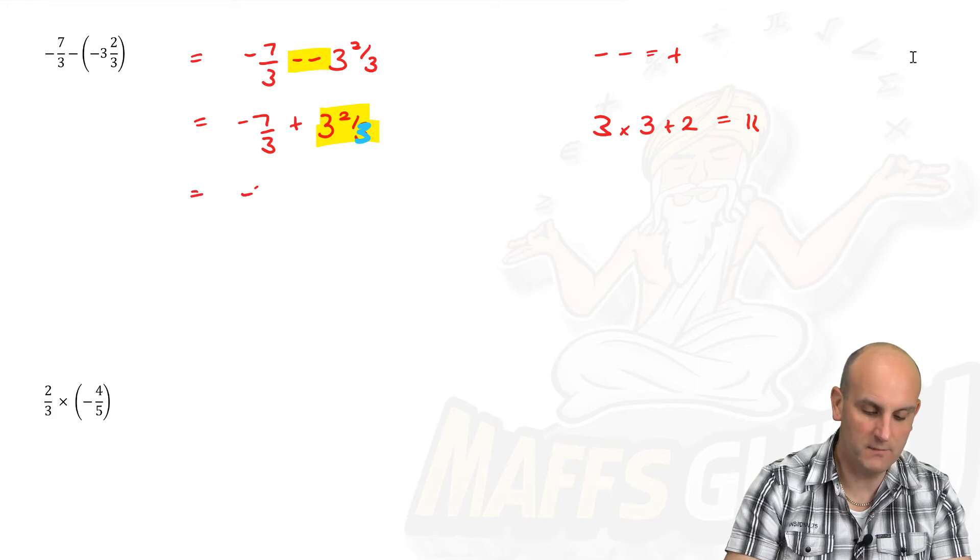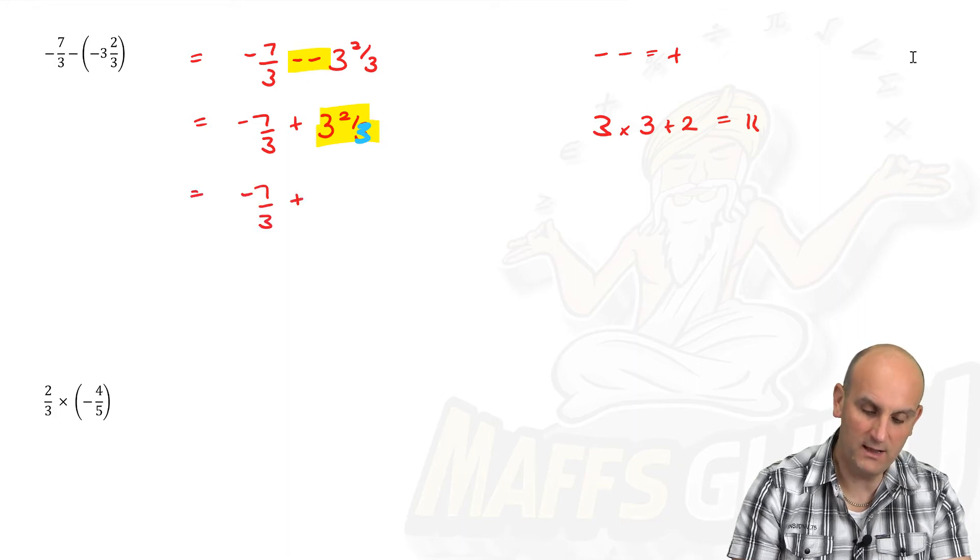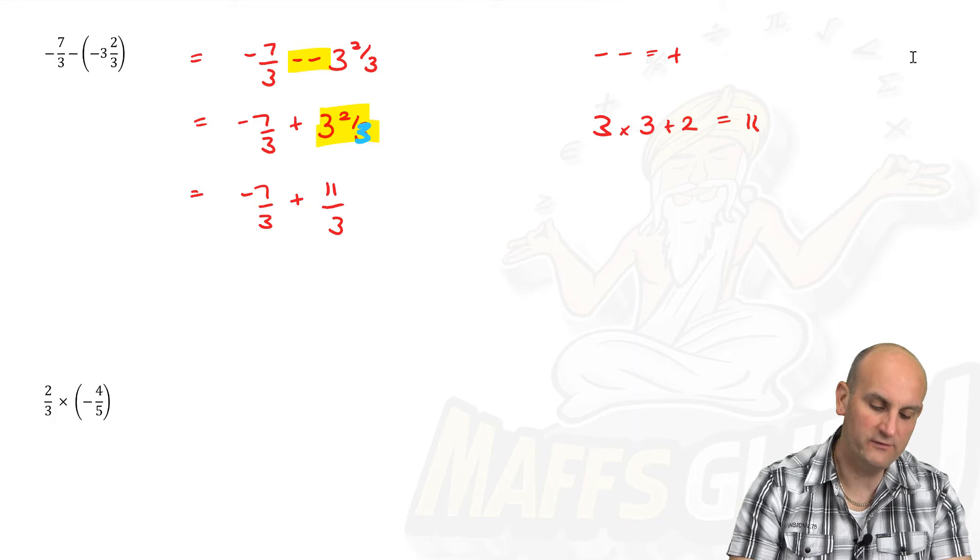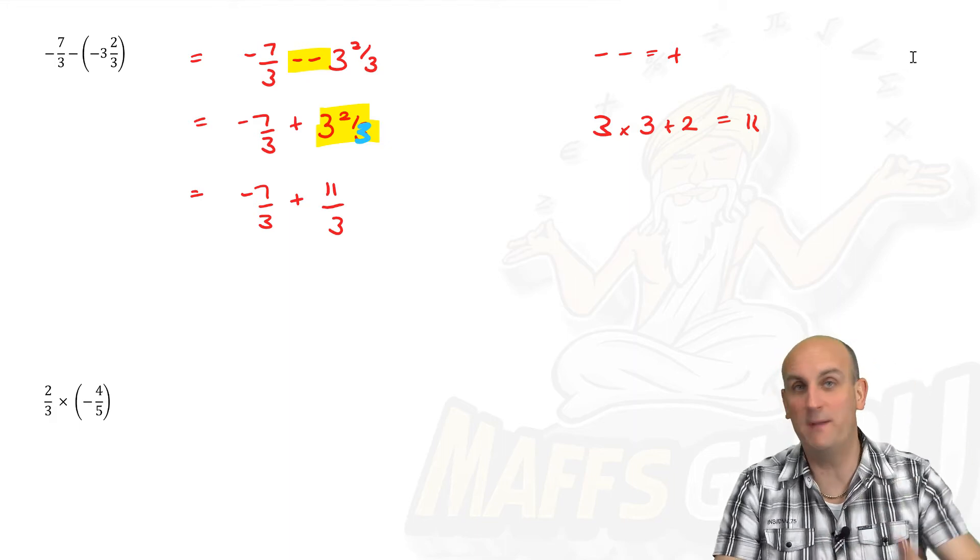So that becomes minus seven thirds plus eleven thirds. And again, not sure what I'm doing here, go back. There is a video. It explains all of this to you.